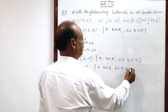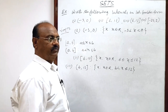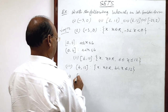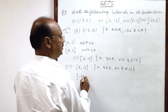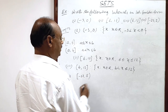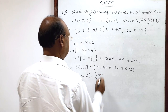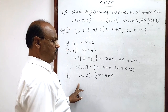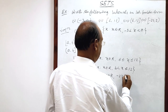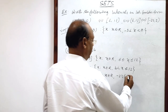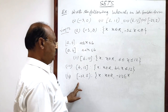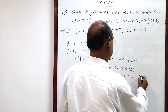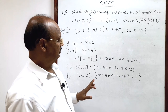Hope you are understanding it — this is very interesting and simple. The fourth example: the left side is closed at minus 23, and the right side at 5 is open. So the interval will be: x such that x belongs to the set of real numbers, and since the left side is closed, minus 23 is less than or equal to x — we use the sign of equality. The right side is open, so we write less than 5.